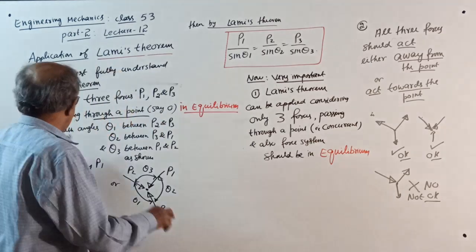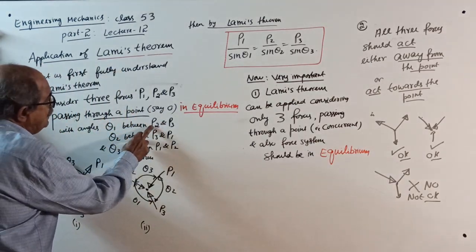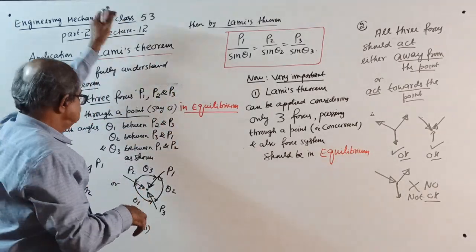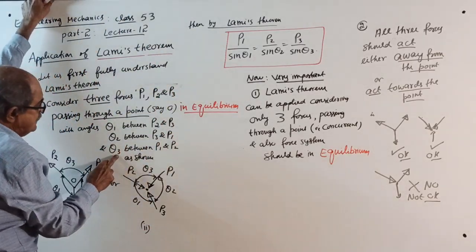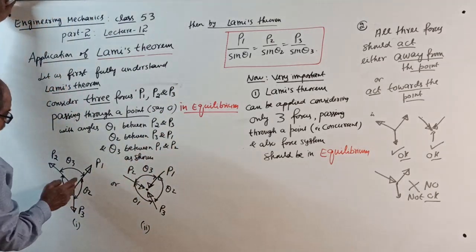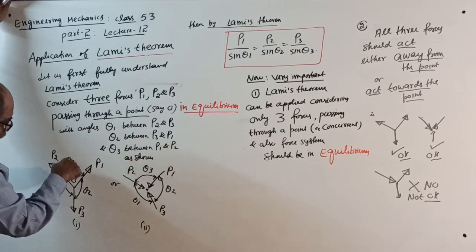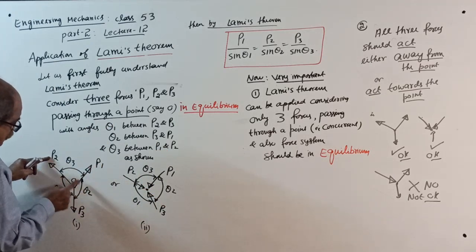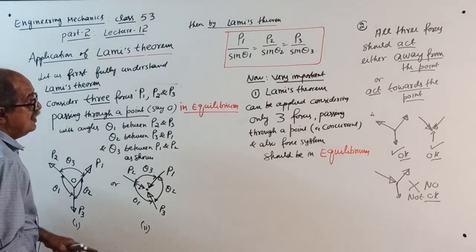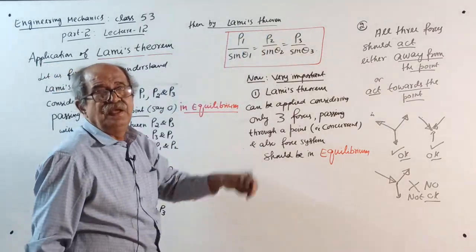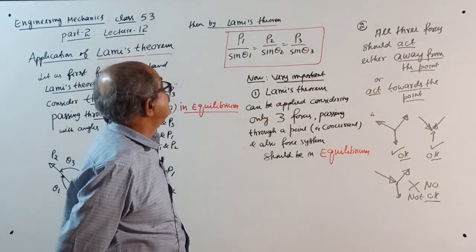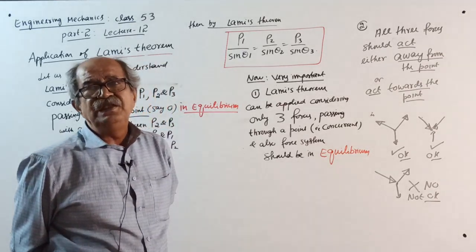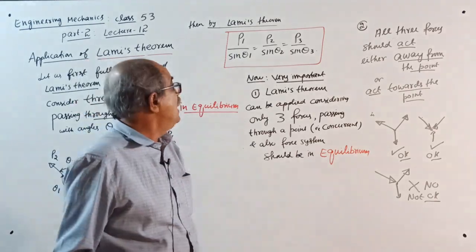The three concurrent forces P1, P2, and P3 are in equilibrium. The angle theta 1 is between P2 and P3, theta 2 is between P3 and P1, and theta 3 is between P1 and P2. By Lamy's theorem: P1 / sin(theta1) = P2 / sin(theta2) = P3 / sin(theta3).